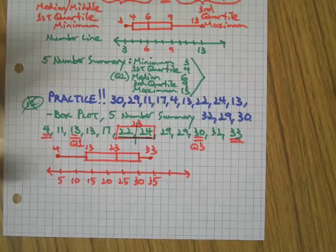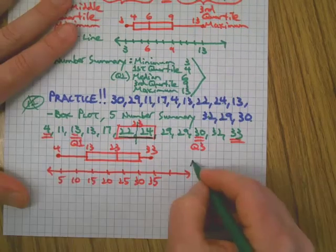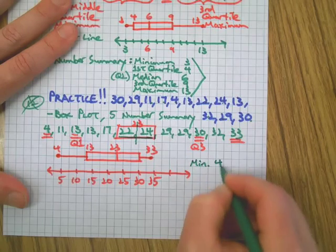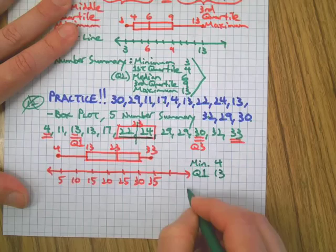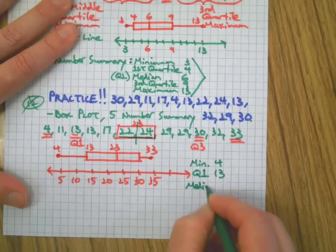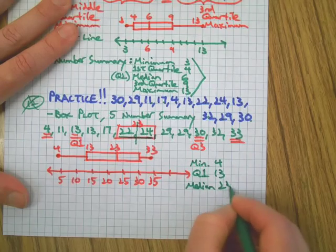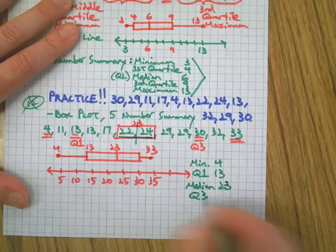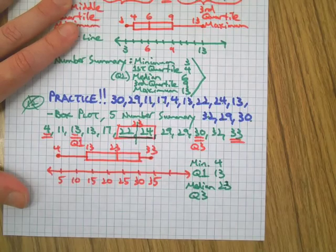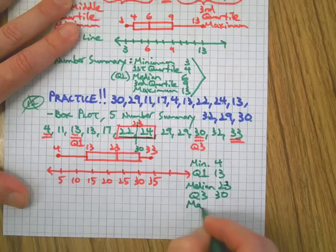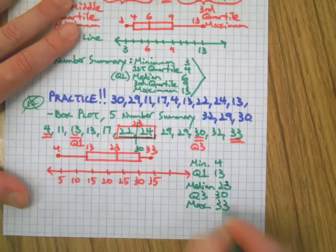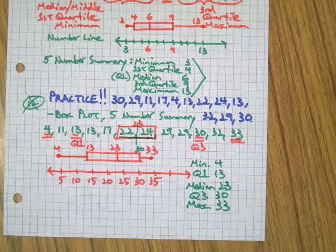And then our five number summary. From smallest to largest, we've got the minimum 4, first quartile 13, median or second quartile 23, third quartile is 30, and the maximum is 33.